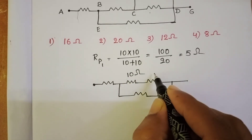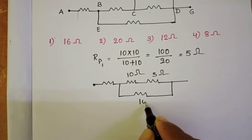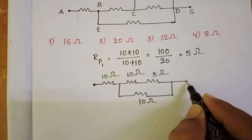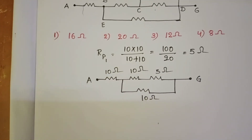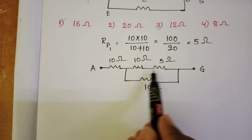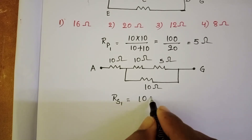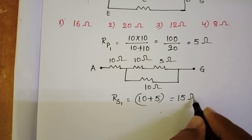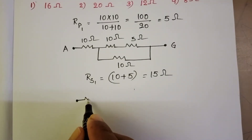The circuit now has a 10 ohm resistor, a 5 ohm resistor, another 10 ohm, and a 10 ohm between points G and A. These two resistors — 10 ohm and 5 ohm — are in series, giving 10 plus 5 equals 15 ohm.